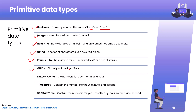There is also the GUID — Global Unique Identifier — data type. Dates are there too, containing the number of days, months, or years. The time of day data type contains hours, minutes, and seconds. UTC DateTime is also there — it contains the number of years, months, days, hours, minutes, and seconds in one data type. Other than these, we also have var and any type data types, which will be covered in separate videos later.